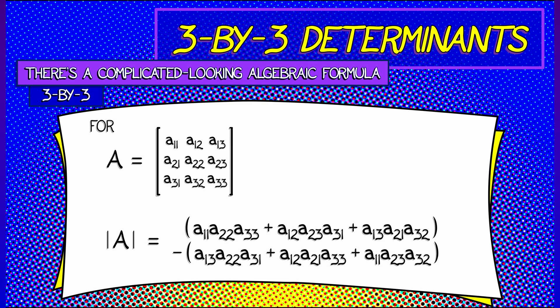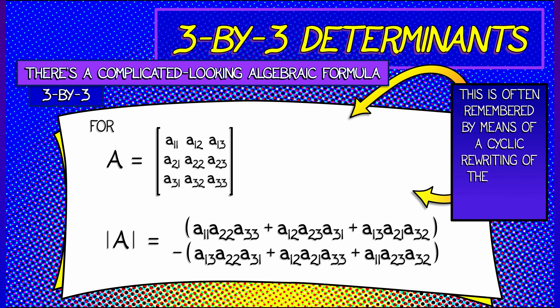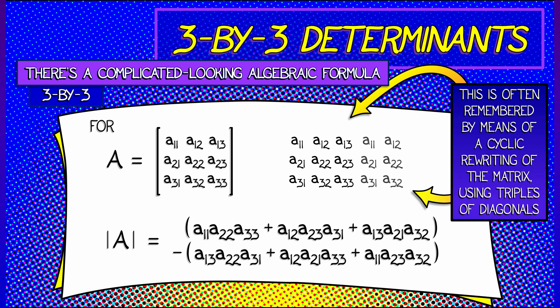It's often remembered by means of a little bit of a trick. You take the columns of A, you write them down, and then you continue writing the columns of A cyclically wrapped around, repeated. And then you do this little motion where you use those diagonal lines to tell you what triples to multiply together. And then you add the ones going one way and subtract the ones going the other way.